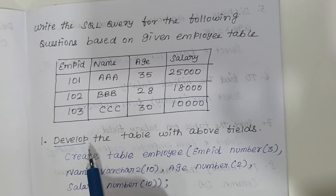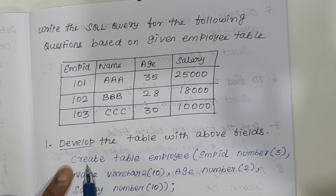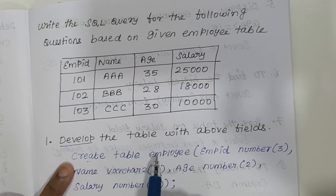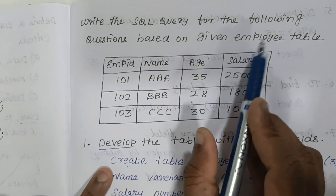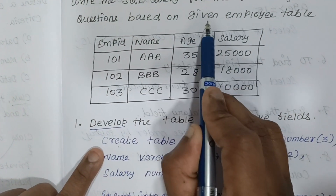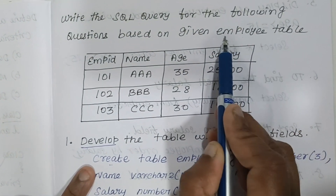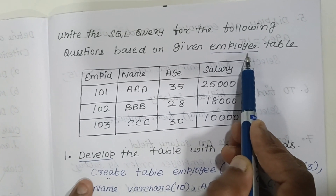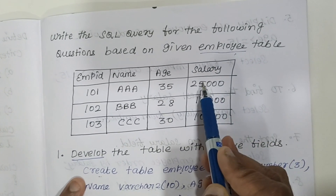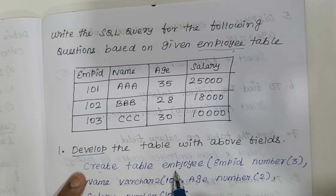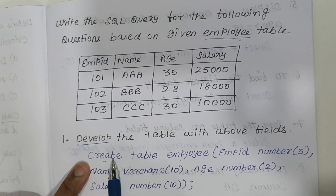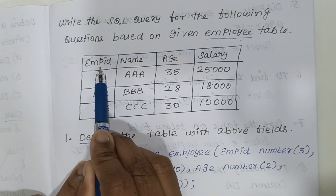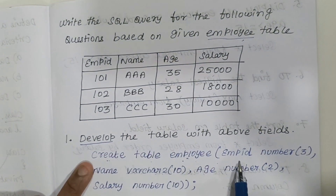To create a table, you use CREATE as a keyword: CREATE TABLE followed by the table name. If the question says 'given employee table', you use 'employee' as the table name. If no name is given, you can write one on your own. After CREATE TABLE employee, open the bracket and start listing the columns — first column is emp_id.